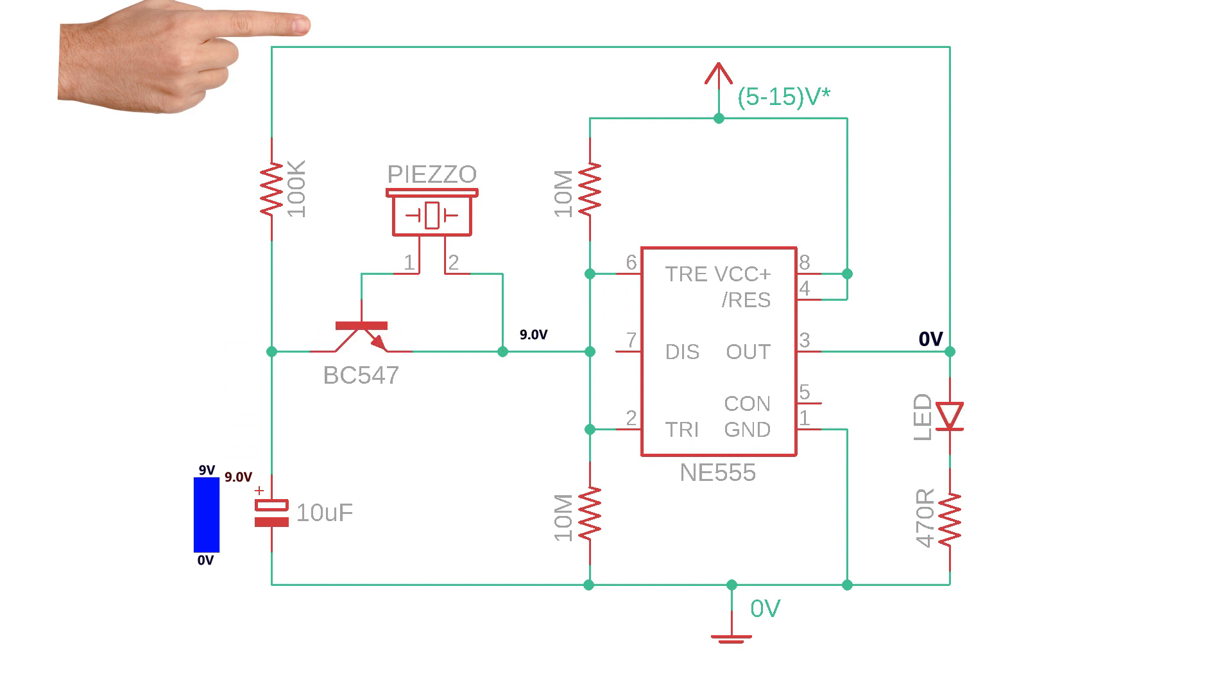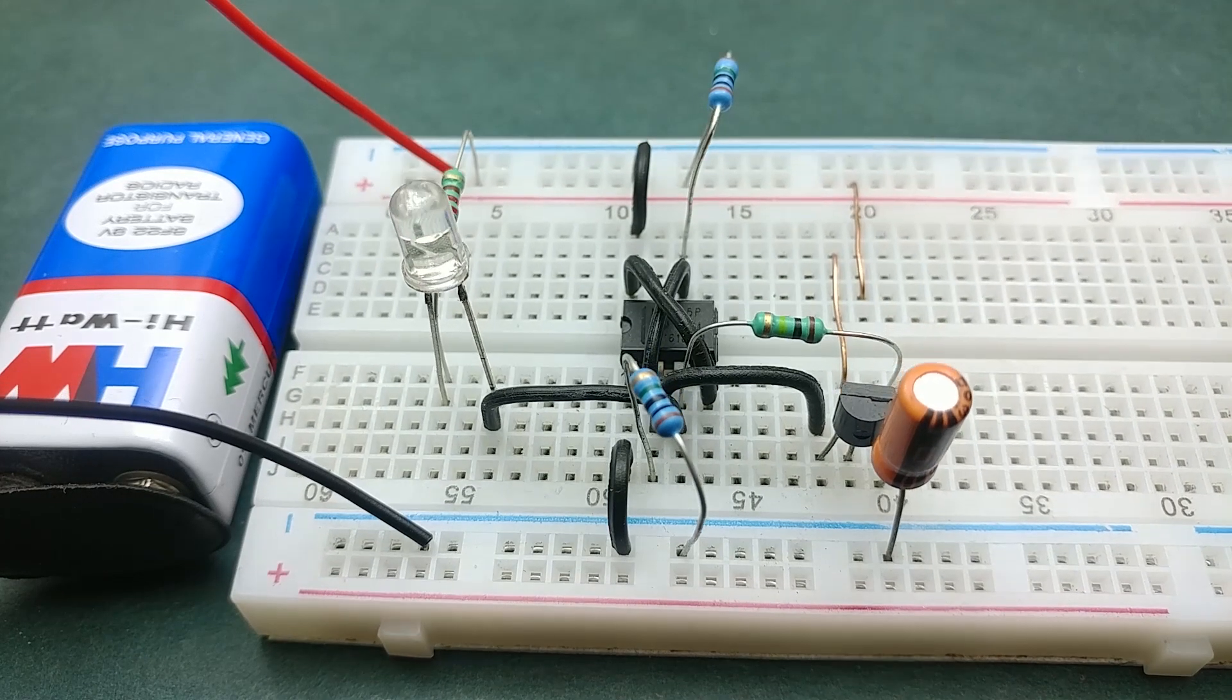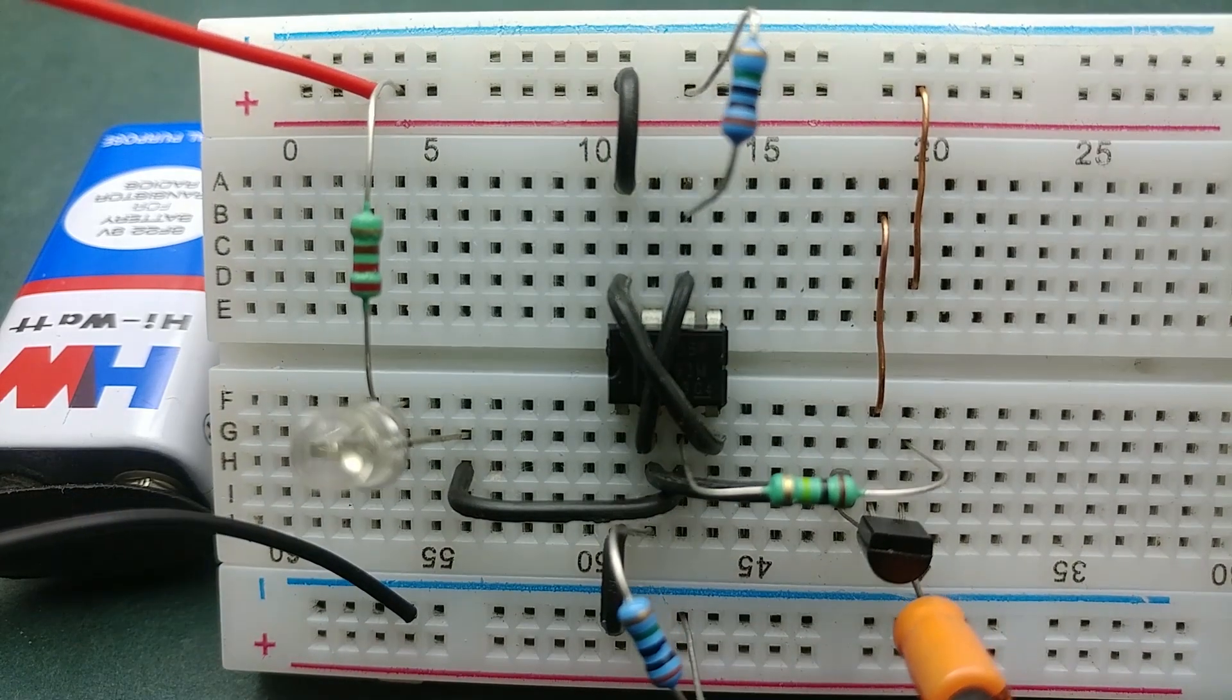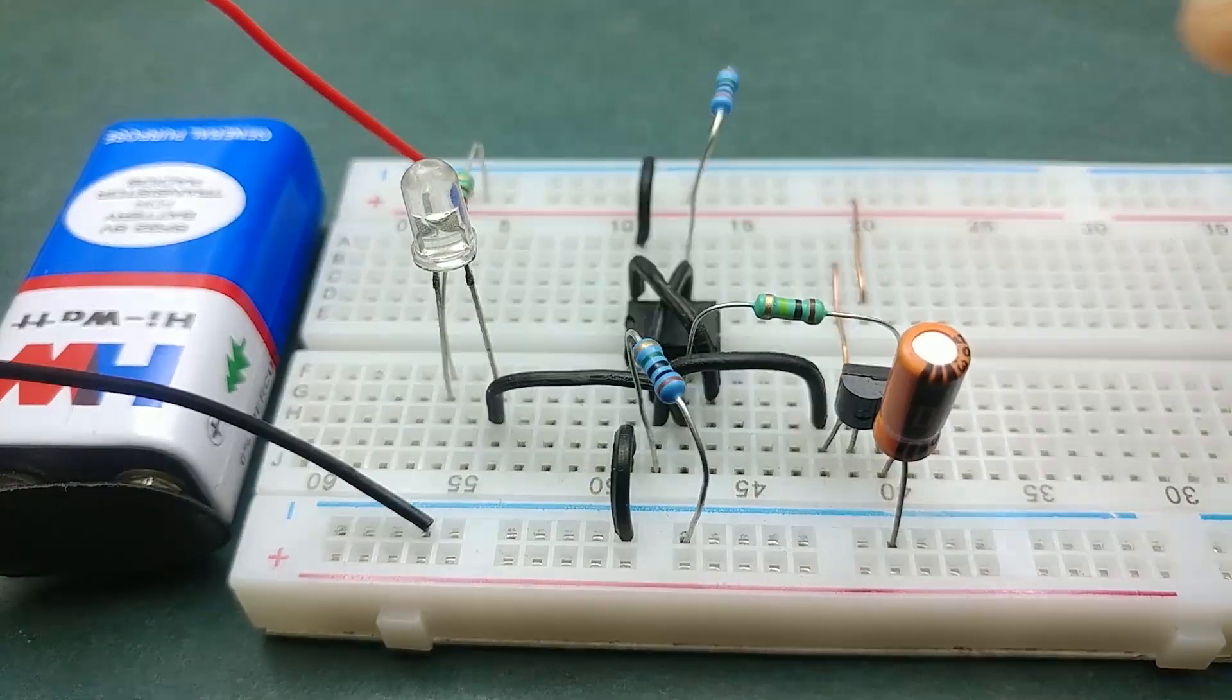We can also convert this circuit into a touch on touch off circuit by using two conductors one at the base of transistor and the other at the positive rail instead of the Piezo sensor.